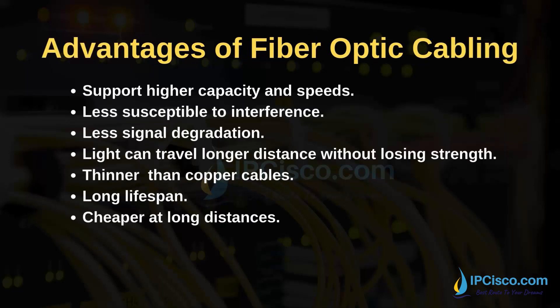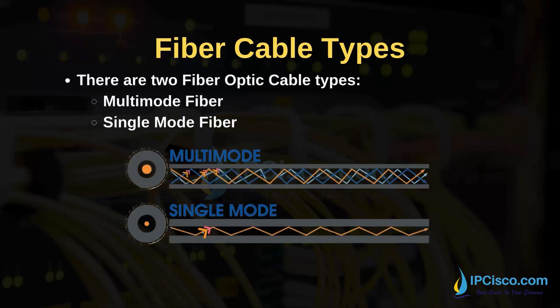Why do we use fiber optic cables? What are the advantages? First of all, fiber optic cables support higher capacity and speeds. They are less susceptible to interference and there is less signal degradation. Light can travel longer distances without losing strength, which is not possible on copper lines. Fiber optic cables are thinner than copper twisted pair cables, have a longer lifespan, and for long distances, fiber optic cables are cheaper. You can reach longer distances with good performance by fiber optic. There are two main types of fiber optic cables.